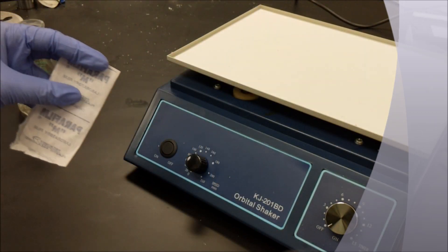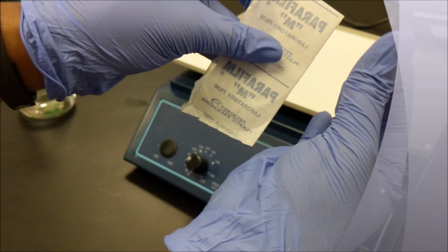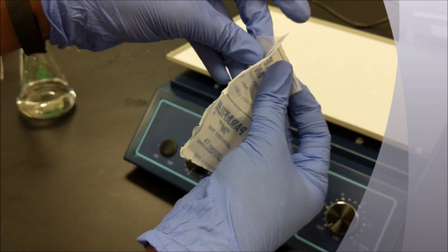To separate the parafilm from the paper, simply rub the strip between your thumb and index finger.